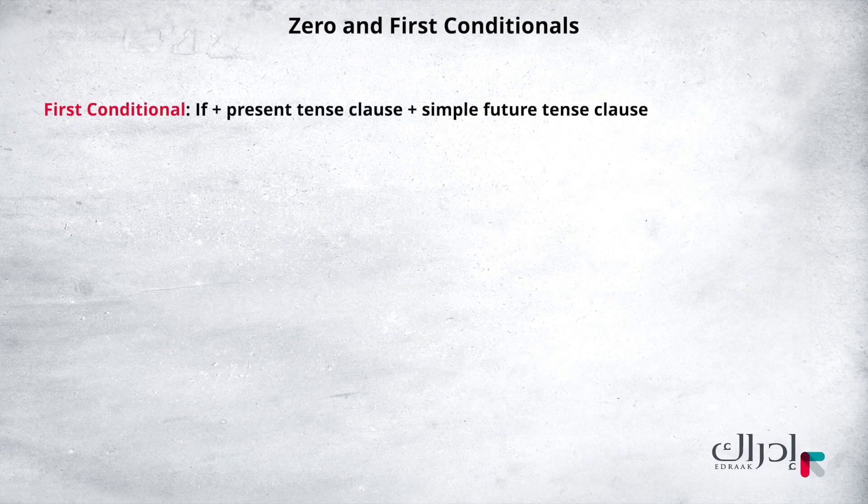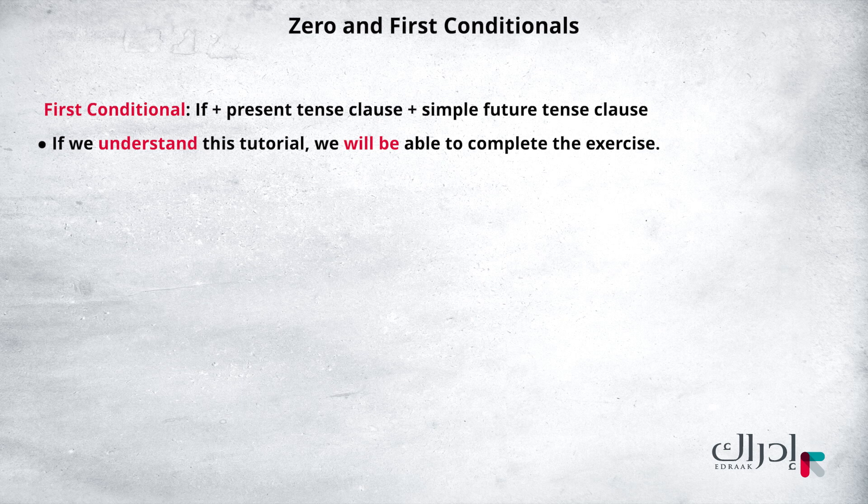It is constructed the following way: if followed by the present clause, followed by the simple future tense clause. Can you think of any more situations that are likely to happen? Such as: if we understand this tutorial, we will be able to complete the exercise. Can you give it a try? Bye.